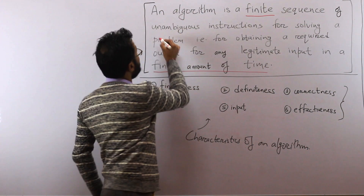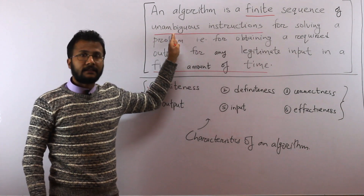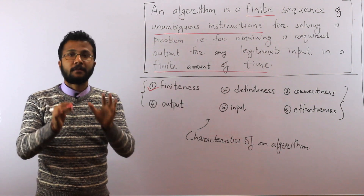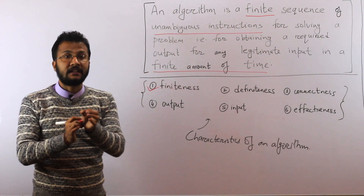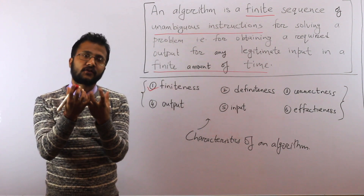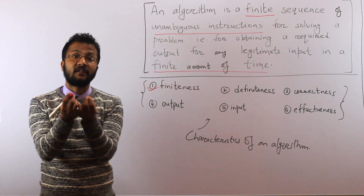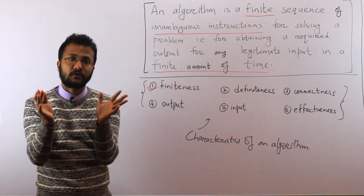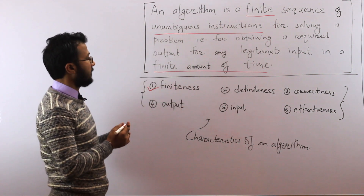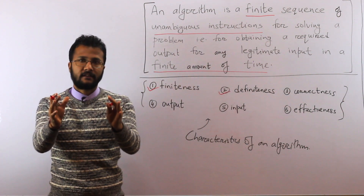The next aspect is unambiguous instructions. The instructions you provide in an algorithm should be clear, precise, and to the point. Each instruction should do a specific task and have a specific meaning — it should not carry more than one meaning. It should have no ambiguity. This property is called definiteness — each and every instruction must be definite.